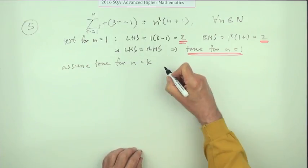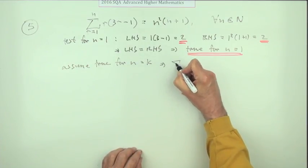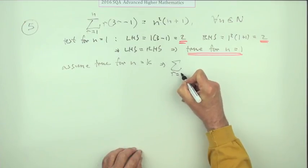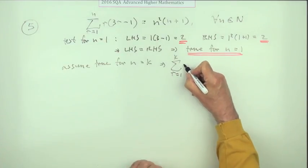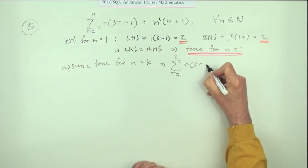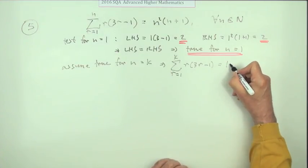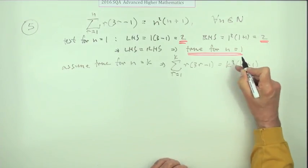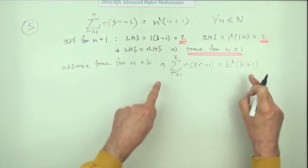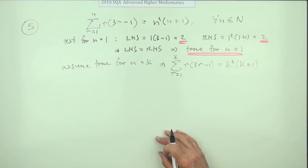That would mean popping k into that, r equals 1 to k into this, should give me k squared times k plus 1. You don't know if that's true, but that's not the point.